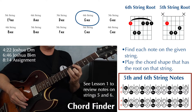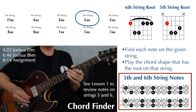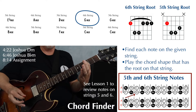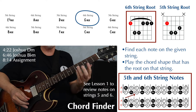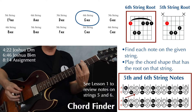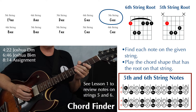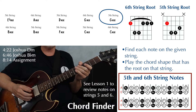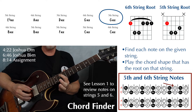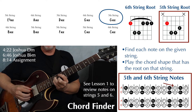Next we have G minor on string six. Find your root note first — the sixth string third fret, that's your G. And then play your sixth string shape because our root is on the sixth string. We also have another G minor, this time with the root on the fifth string. You need to find your G on string five — that's going to be way up at the tenth fret — and then we play our fifth string root shape.